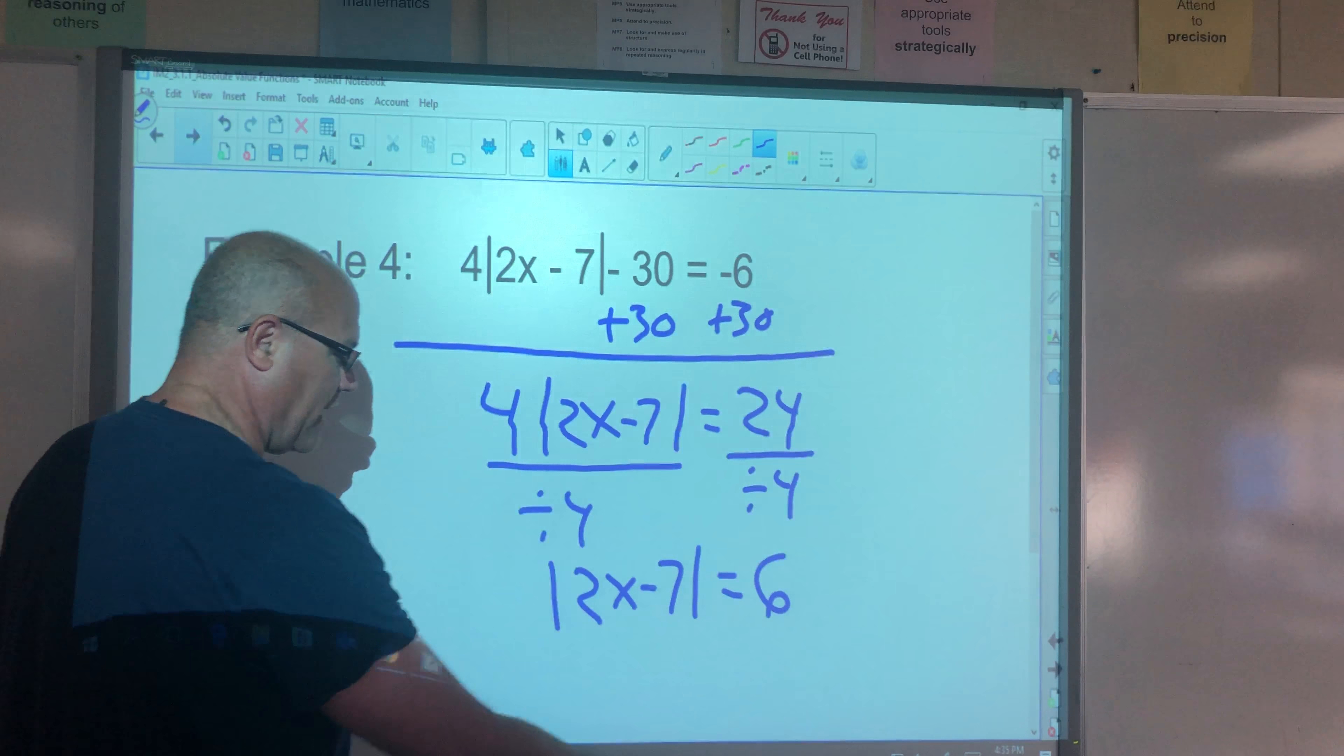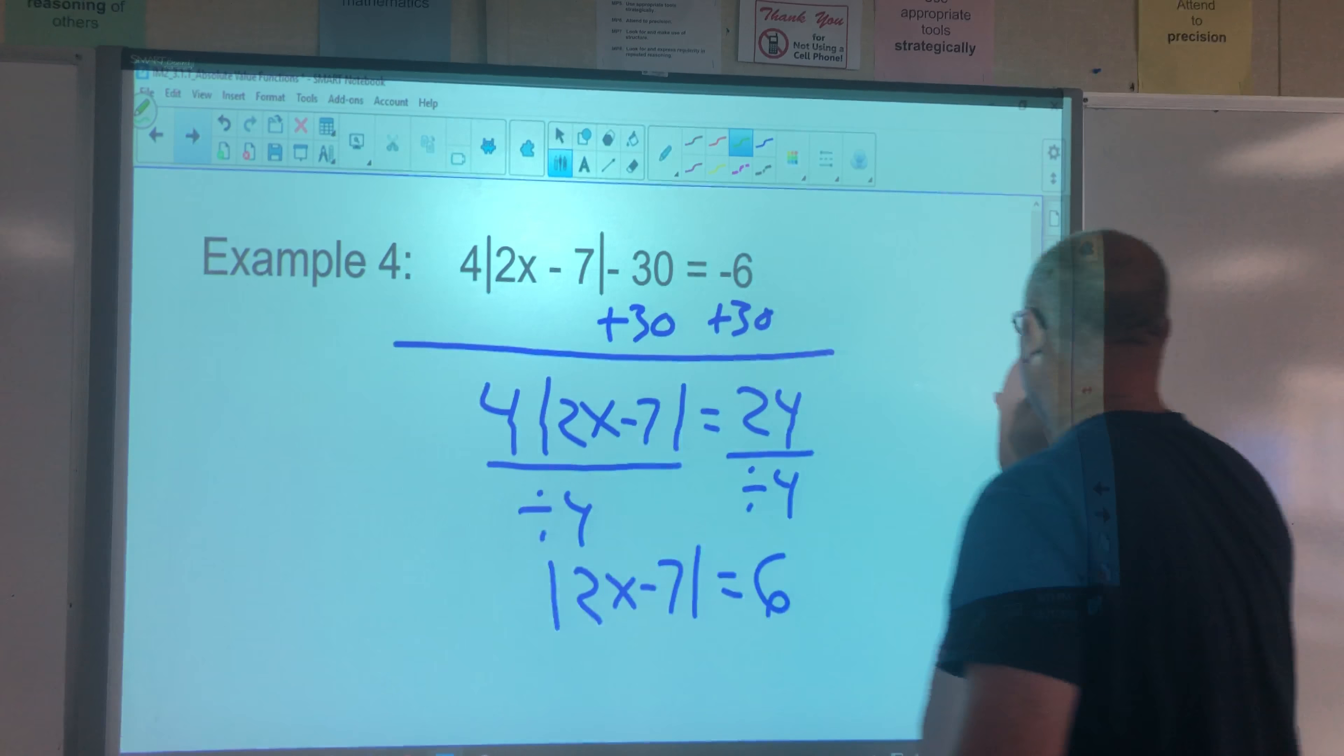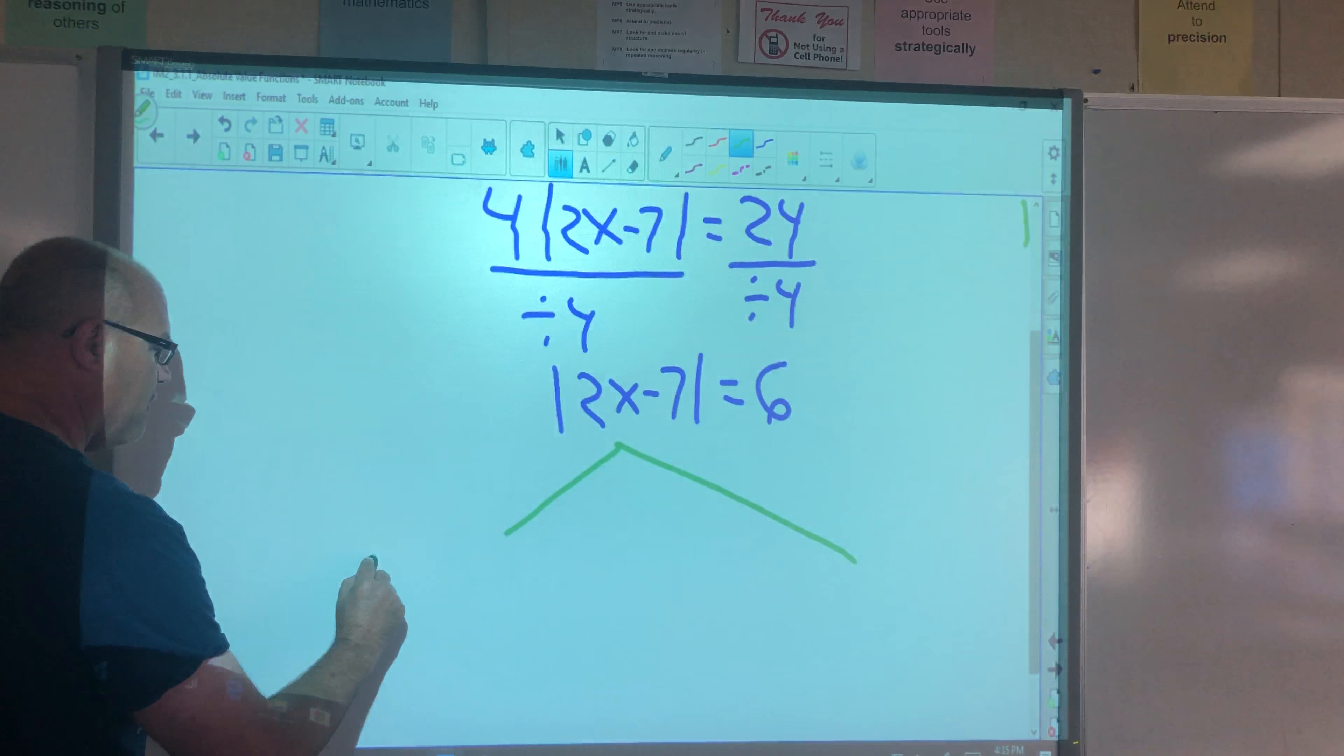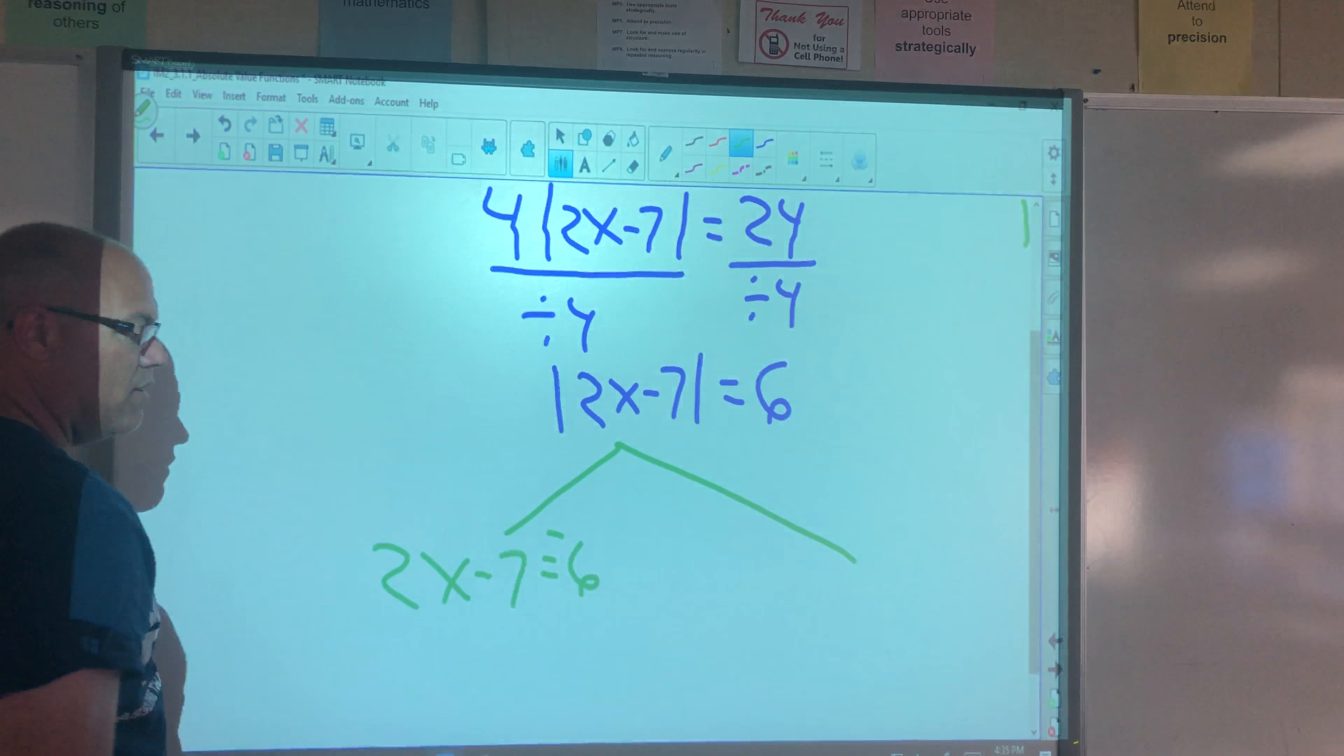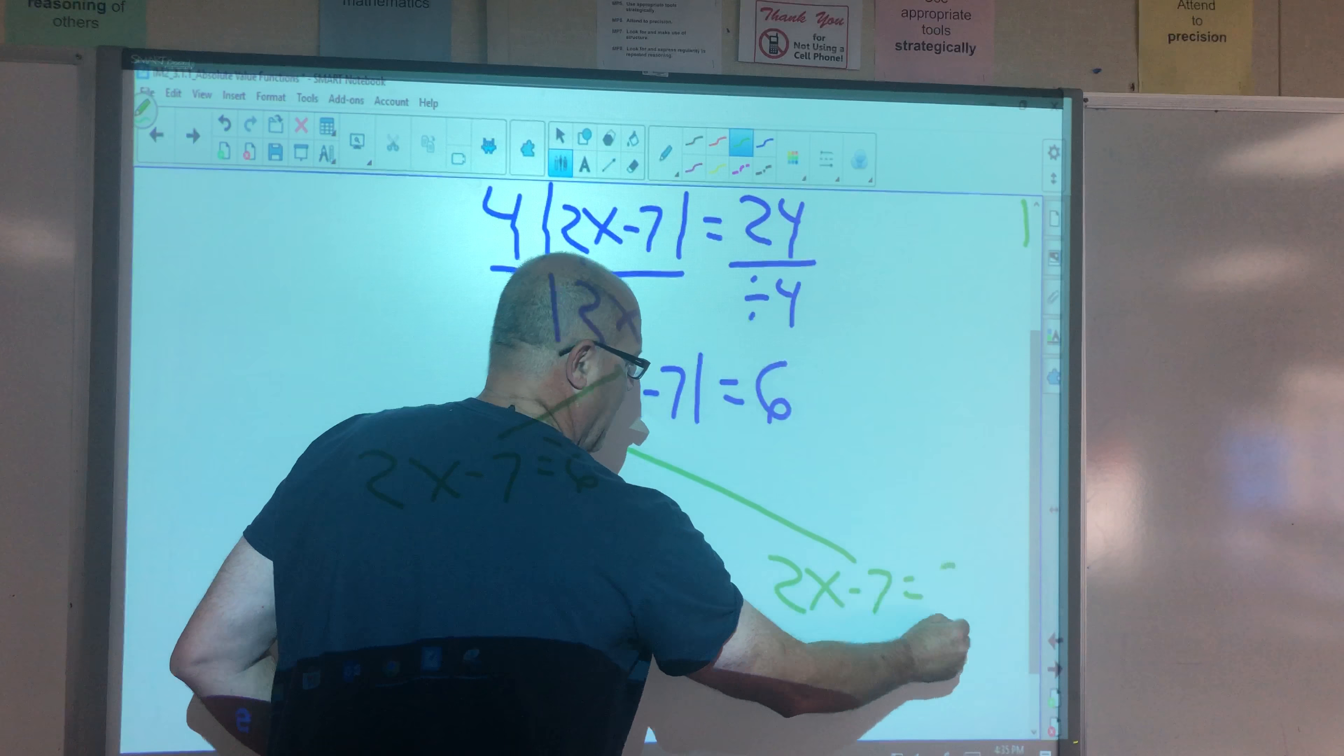Now, does our problem look like example number one? You bet. It does. So let's give me a little space here. Let's break it into two equations. We're going to have 2x minus 7 could equal negative 6 in there, or 2x minus 7 equals positive 6.